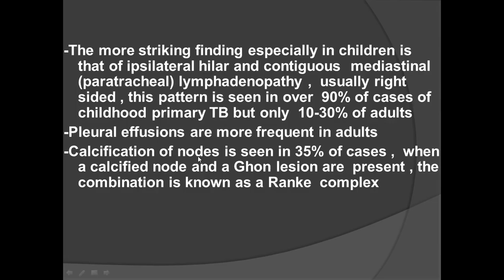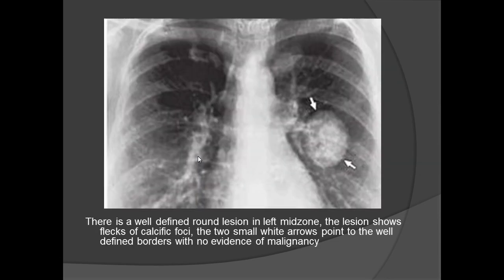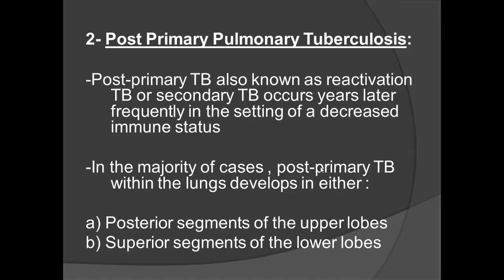The most striking finding of primary TB in children is ipsilateral hilar and contiguous mediastinal paratracheal lymphadenopathy, predominantly right-sided, seen in over 90% of childhood primary TB cases. Pleural effusions are more frequent in adults. Calcification of nodes is seen in 35% of cases; when a calcified node and a Ghon lesion are both present, the combination is called Ranke's complex. A well-defined rounded, partially calcified soft tissue density in the left mid-zone represents a Ghon focus, not malignancy.